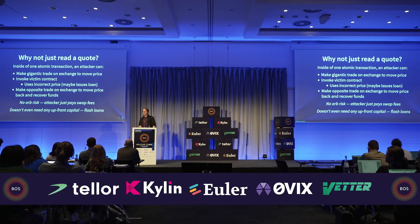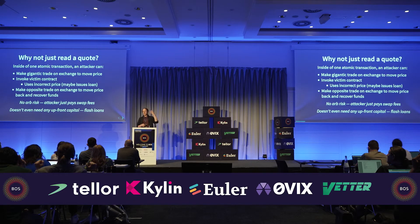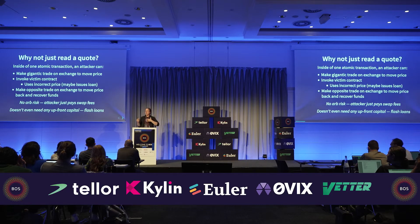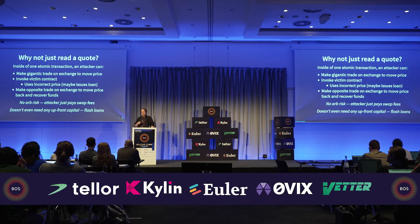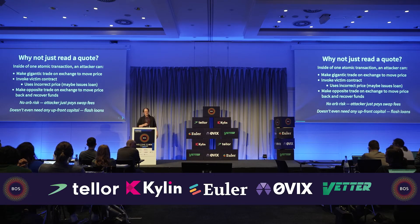Just reading a price off the chain is not a good thing because it can be easily manipulated in the context of an atomic transaction. This is how the attack would basically work: you start an atomic transaction as a smart contract, make a gigantic trade on the exchange to move the price, invoke a victim contract which will see that very wrong price. If it's a lending protocol, it might issue a loan at that incorrect price. Then you make the opposite trade to recover your funds. Because it's atomic, no one can arbitrage you, and it doesn't need upfront capital because you could use a flash loan.